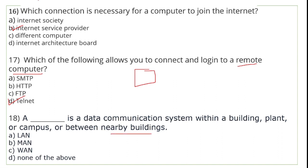A dash is a data communication system within a building, plant, or campus, and between nearby buildings. Aisa data communication system jo kuch buildings ko milakar bana ho ya within a campus ho — is chhote se network ko hum bolte hain Local Area Network (LAN).